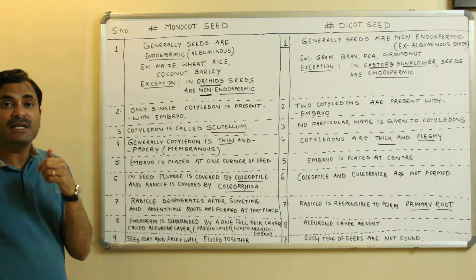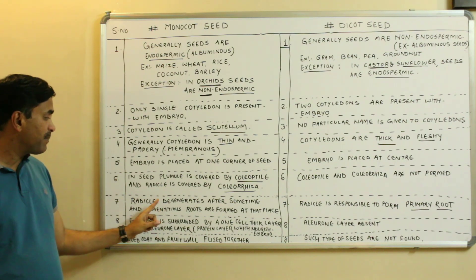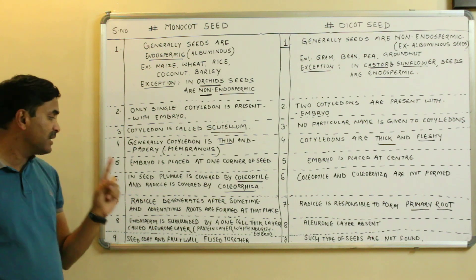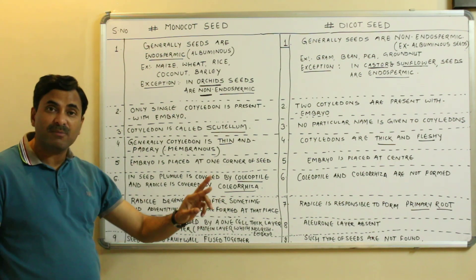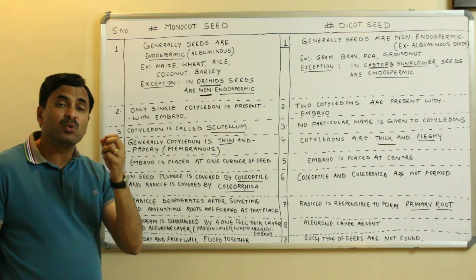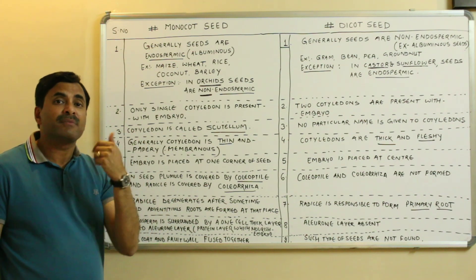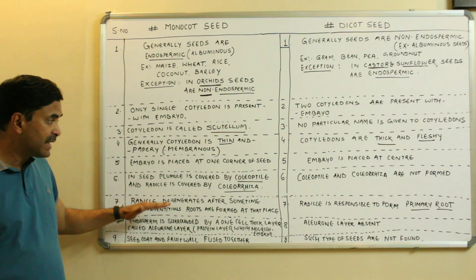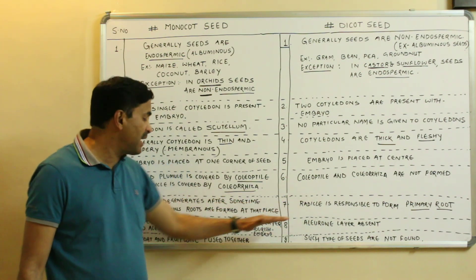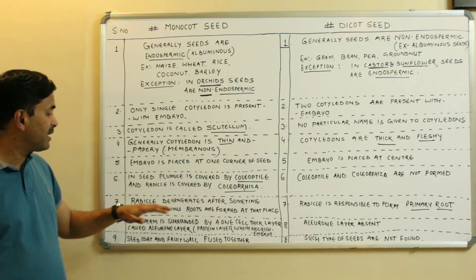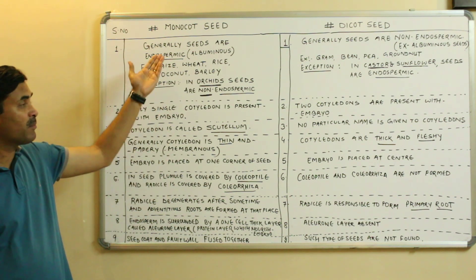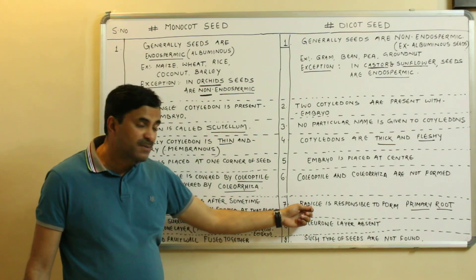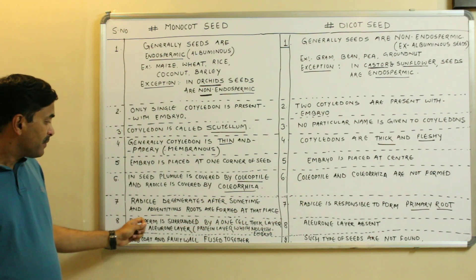Seventh point: in monocot seeds the radicle degenerates soon after germination and adventitious roots are formed in its place. Either the radicle degenerates and adventitious roots replace it, or the radicle forms a primary root that is not long-lasting and is replaced by adventitious roots. In dicot seeds, by contrast, the radicle forms the persistent primary root.